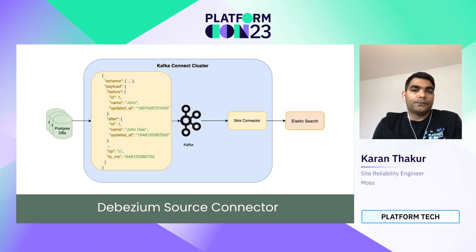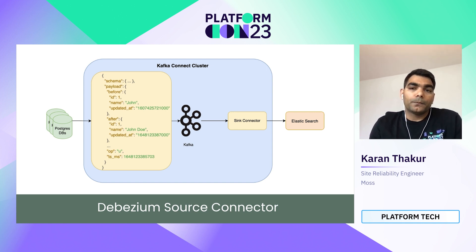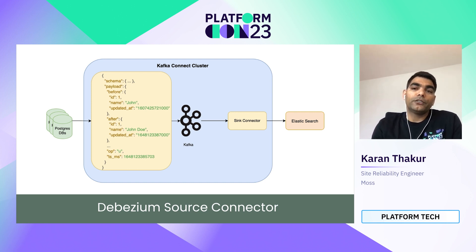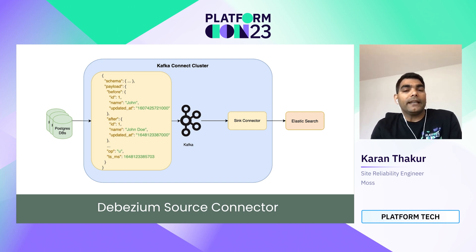Now the Postgres instance is configured to produce a stream of data change events. We need to subscribe to it, and for this we use a Kafka source connector called Debezium. The Debezium Postgres connector acts as a SQL client. When the connector receives changes, it transforms the events into Debezium events that include the log sequence numbers of the event. The Kafka Connect process asynchronously writes these change events in the same order in which they are generated to the appropriate Kafka topic. In summary, it handles three tasks: communicating with Postgres, transforming raw events into JSON, and publishing them to Kafka.